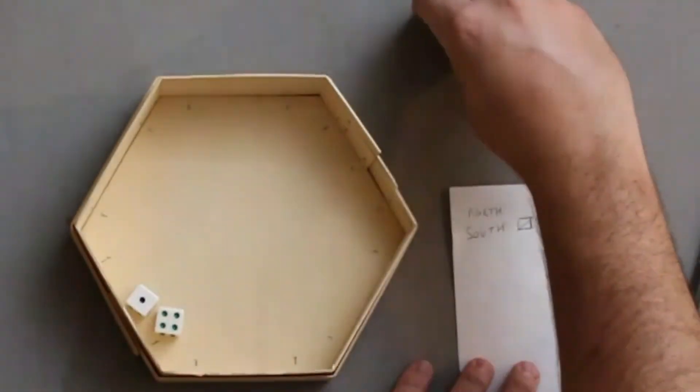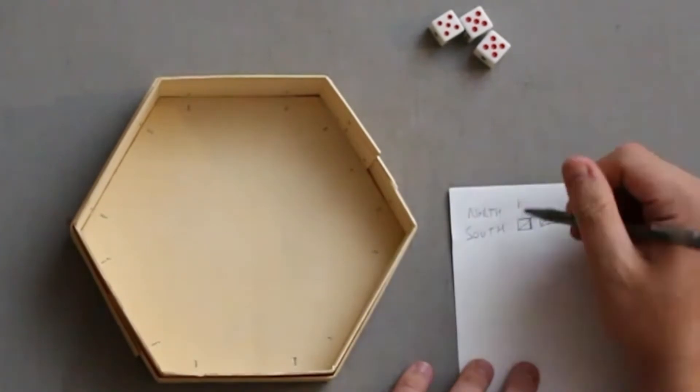And we do that essentially to keep track of how many rolls that we had. And basically the winner of this game is going to be whoever gets 5 of a kind in the fewest number of rolls.